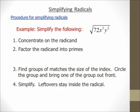So let's simplify a radical. We're going to simplify the square root of 72x³y². Step number one: concentrate on the radicand — the number inside the radical. The index is a 2 because there's no number written up in the corner of the radical, and the coefficient is a 1. Step number two: factor the radicand into primes, so I'm going to break 72x³y² down into primes.